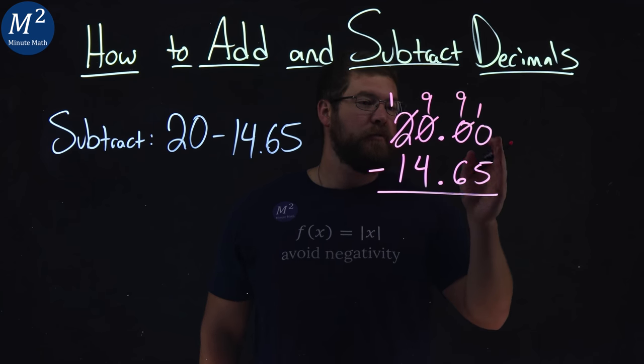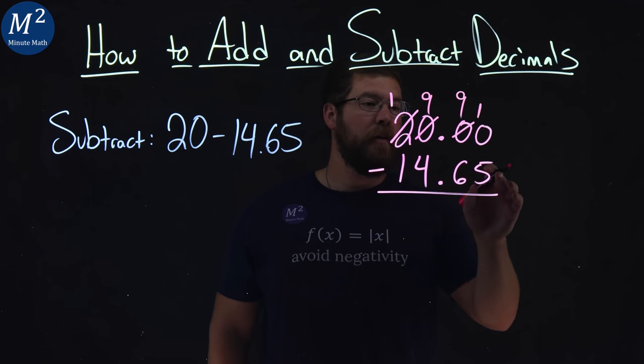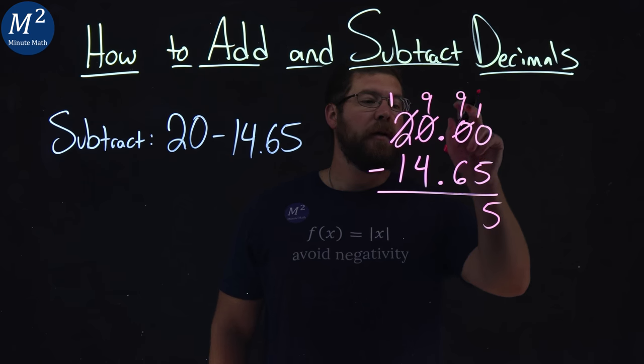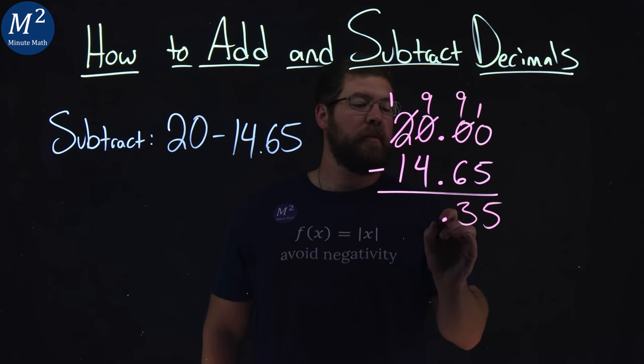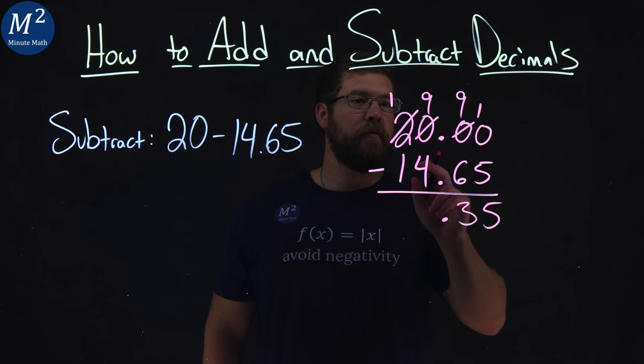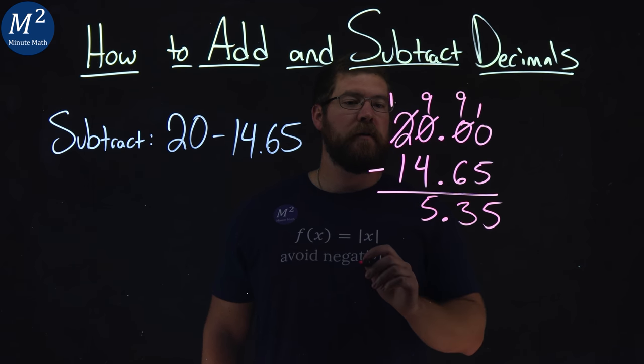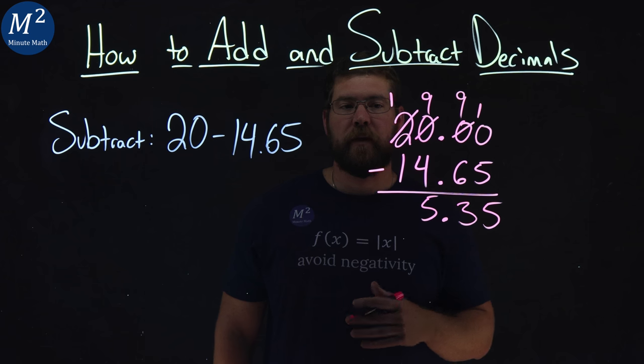From there, we can subtract down. 10 minus 5 is 5. 9 minus 6 is 3, decimal place right here. 9 minus 4 is also a 5, and 1 minus 1 is 0.